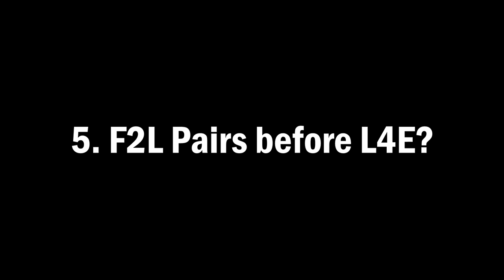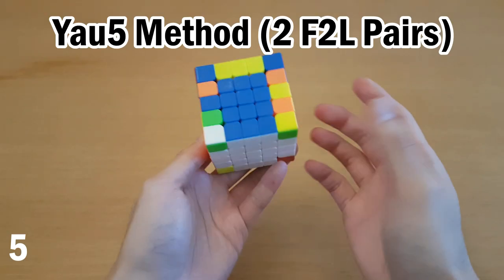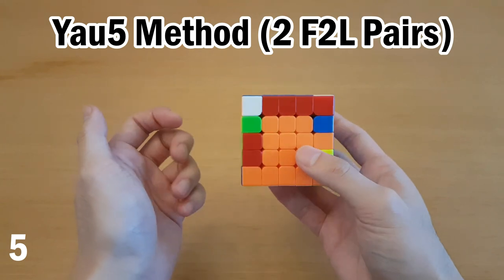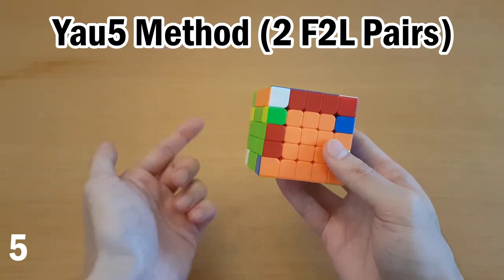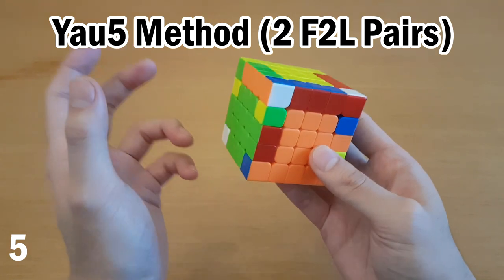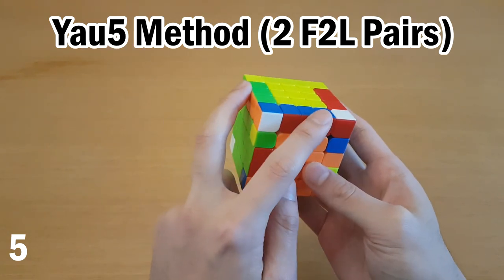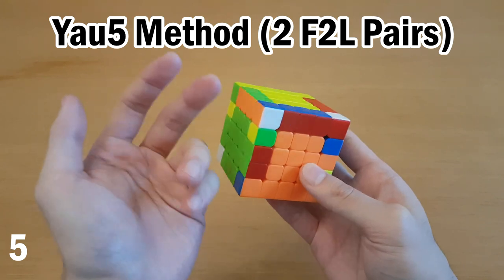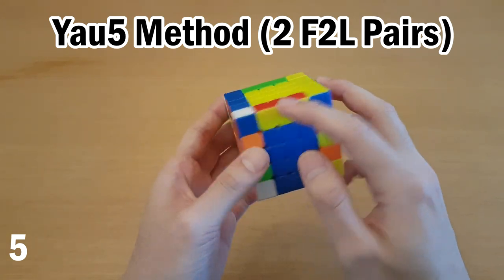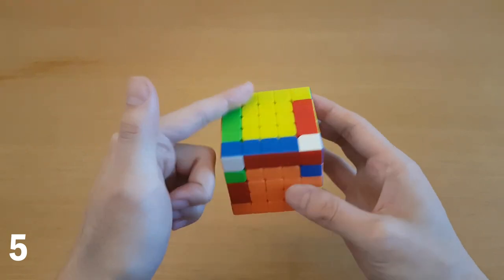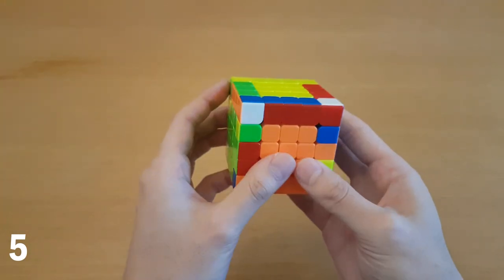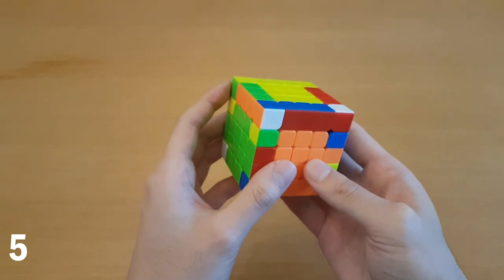Number five, should you solve F2L pairs before last four edges? When you get to the last four edges, in my older videos, I talked about specifically the method called YOW5, and that is when you do solve two F2L pairs at this step. That requires that you have at least two F2L edges solved during the first four edges, which you may not have done. I have two yellows. It could have been three or four. I think it's better to be flexible with what edges you do earlier, just depending on what's lucky. And here, again, you just do whatever is lucky, so you always have good cases.